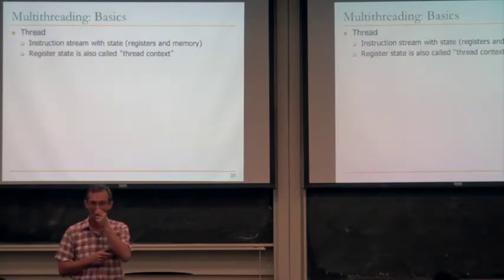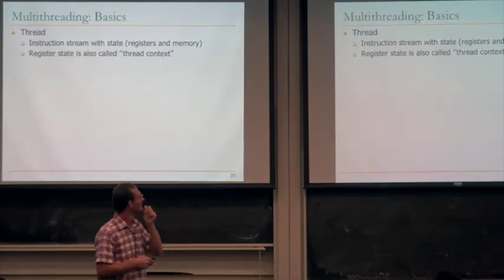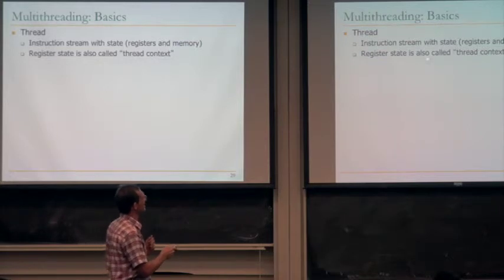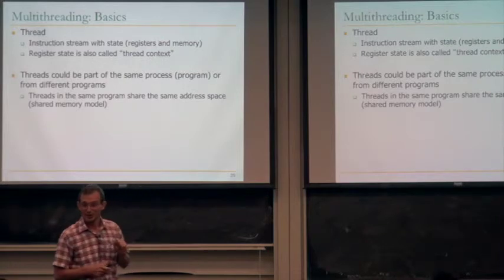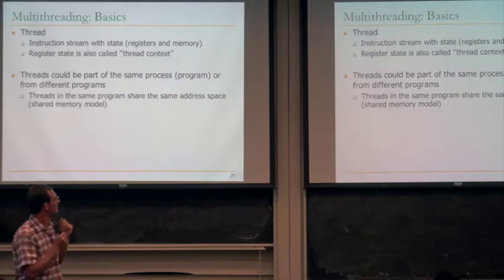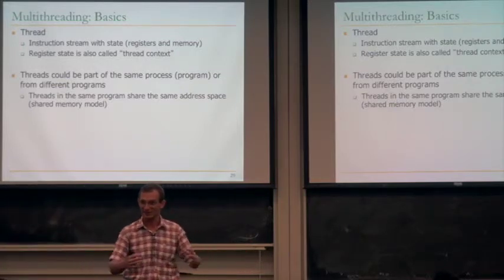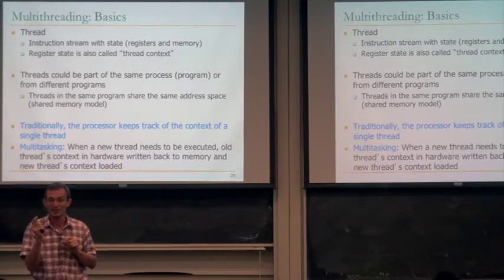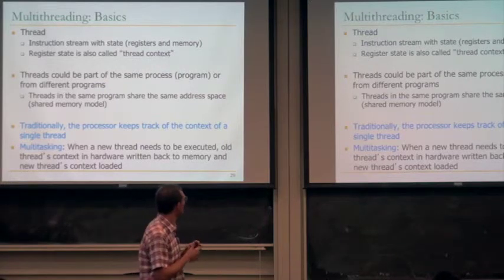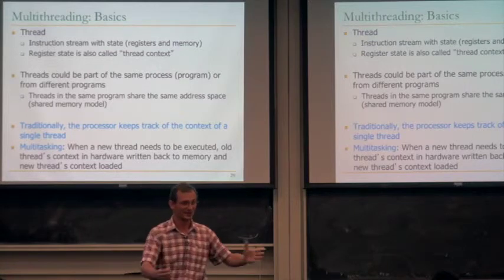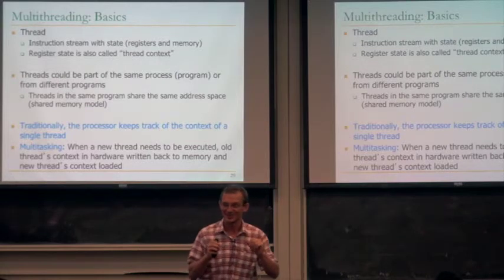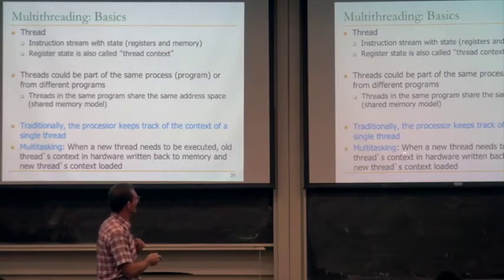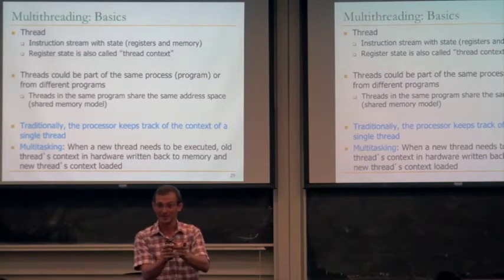What is a thread? A thread is an instruction stream with state — registers and memory. Register state is also called the thread context. Threads could be part of the same process or from different programs; threads in the same program share the same address space in the shared memory model. Traditionally the processor has kept track of the context of a single thread. Systems have used multi-tasking: when executing a new thread, you take out the old thread's context, write it to memory, and load the new context. Multi-threading is different — it means having multiple thread contexts in a single processor.